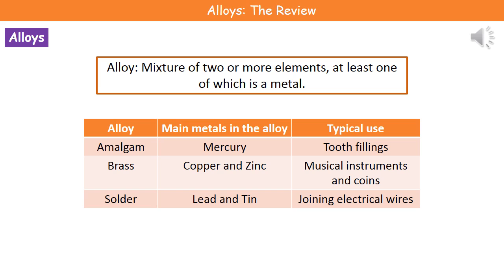Finally, the last alloy we need to remember is solder, which is made of lead and tin. We use that to join electrical wires together.